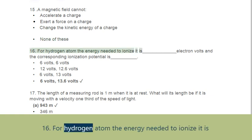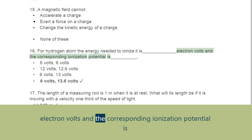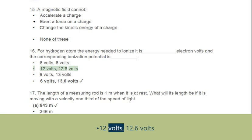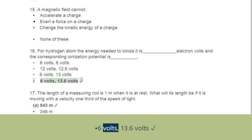Question 16: For the hydrogen atom, the energy needed to ionize it is in electron volts and the corresponding ionization potential is. Options: A. 6 volts, B. 12 volts / 12.6 volts, C. 6 volts / 13 volts, D. 13.6 eV / 13.6 volts.